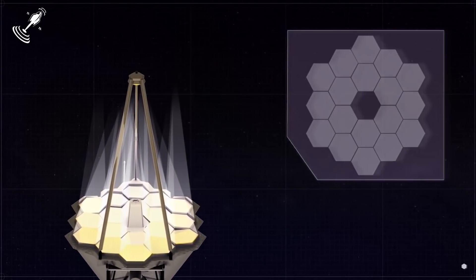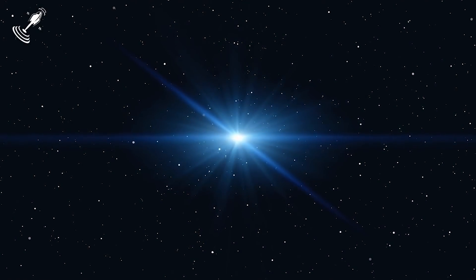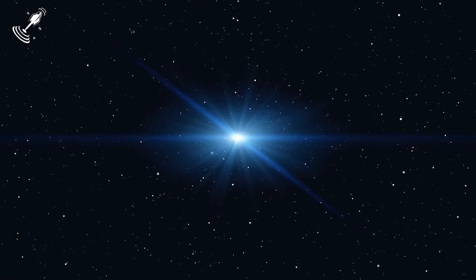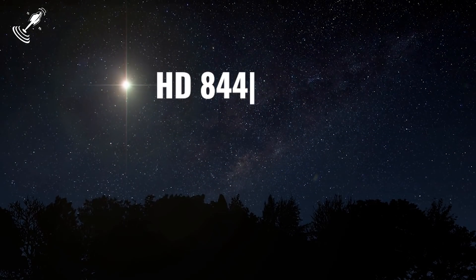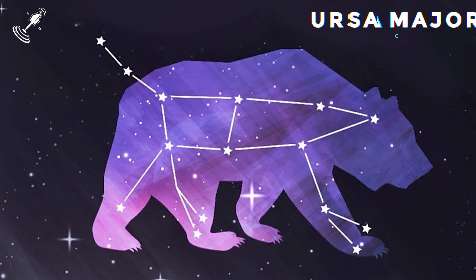The mirror alignment process will not be an easy one, and the entire Webb team will ensure to focus the mirror segments on a distant but bright star. The target has already been chosen, and it will be a star called HD 84406 that is part of the URSA Major constellation.